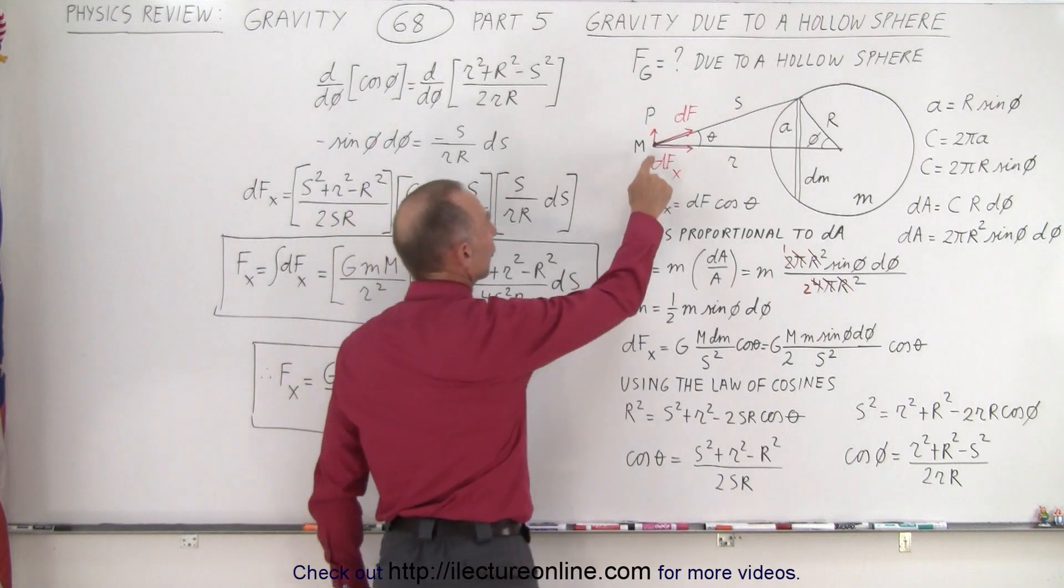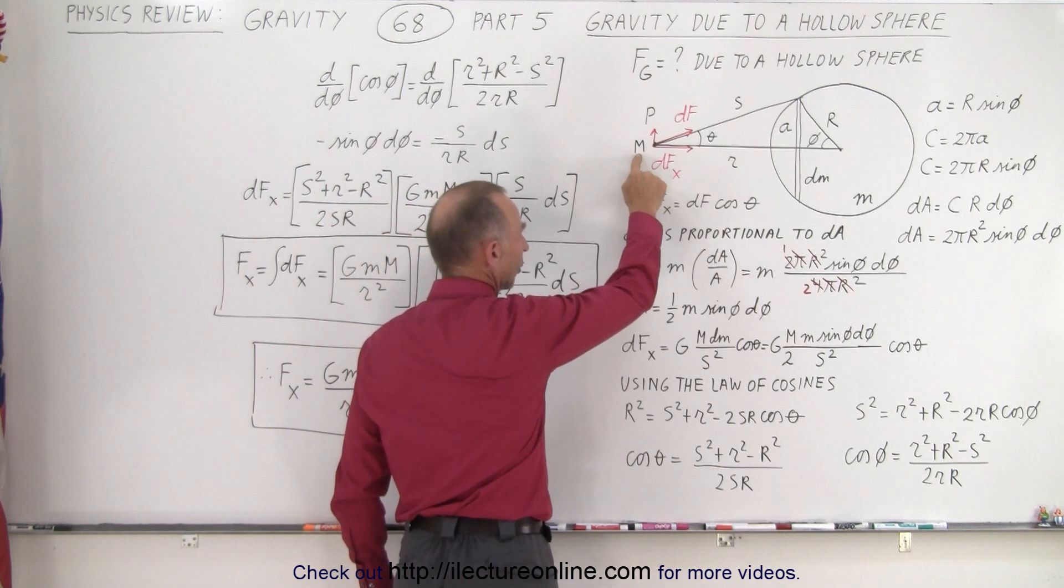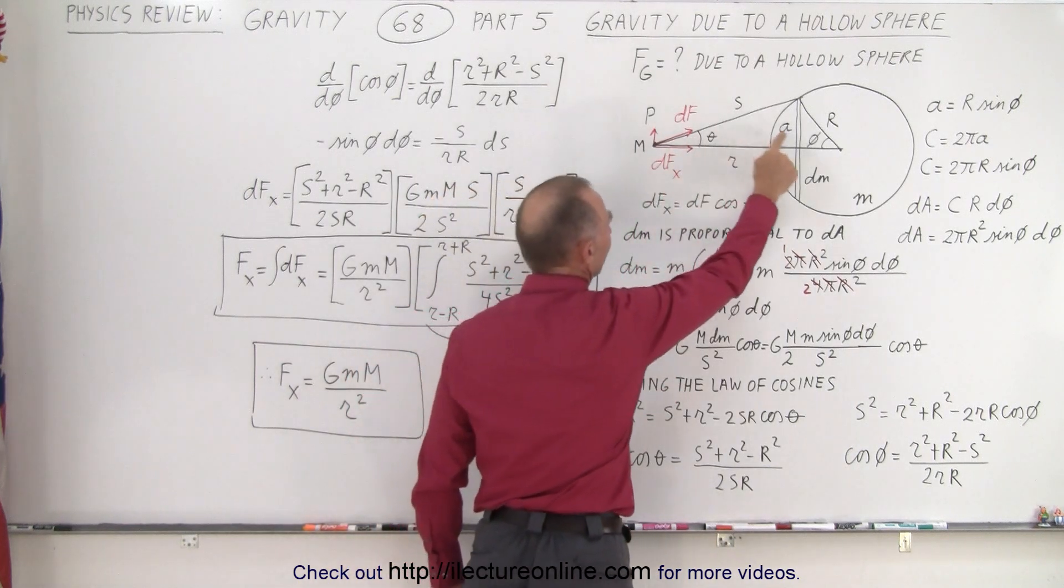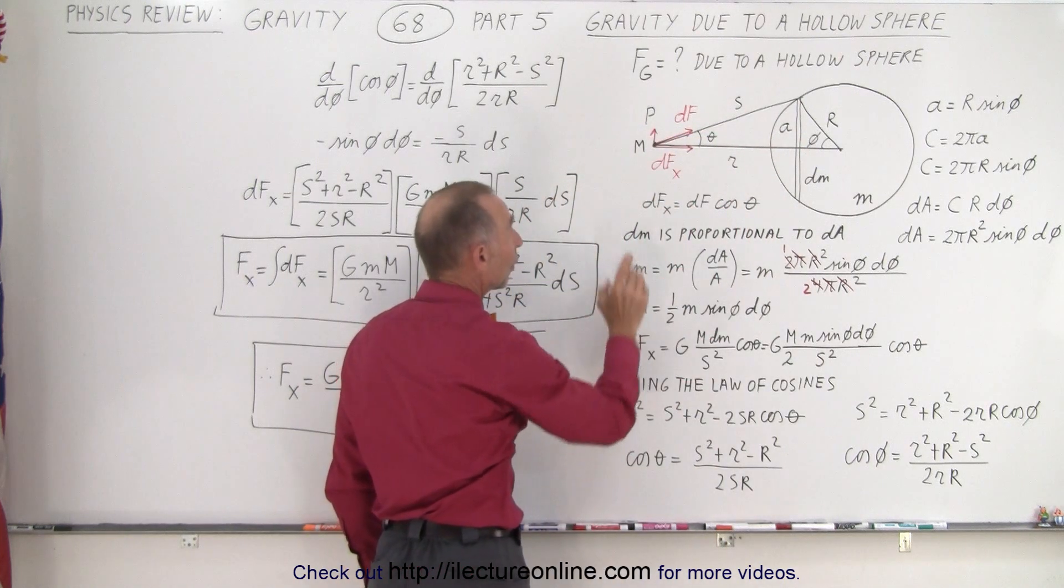And now we want to find the force of gravity on this little mass right here called big M, and we do that because we calculate the force of gravity between the band and the big M. And so that can be found by simply taking,